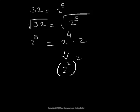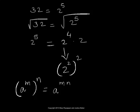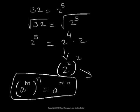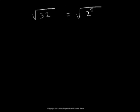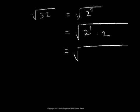If you recall the rule: a to the m to the n is a to the m times n. Based on that rule, this will be 2 to the power 2 times 2, which is 2 to the 4. So we can rewrite square root of 2 to the fifth power as square root of 2 to the fourth power times 2, which is square root of 2 squared, the whole square, times 2.